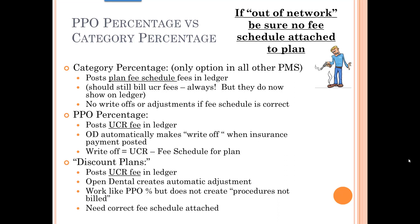Also remember, if you're out of network, you can still use both category percentage or PPO percentage, but you do not want to attach a fee schedule to that insurance plan. Out of network, your fee schedule is your UCR fees, which is going to be the automatic default anyway. So you don't want to attach any fee schedule to a plan when you're out of network.